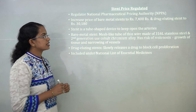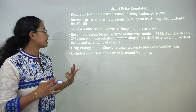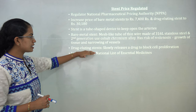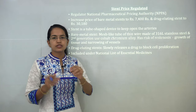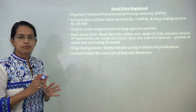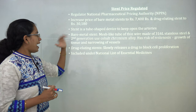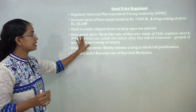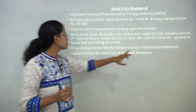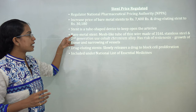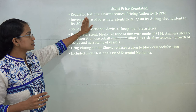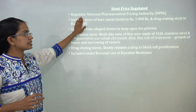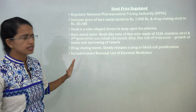Stent price regulation in India addresses devices implanted into arteries to keep them open. There are two types: bare metal stents and drug-eluting stents. Drug-eluting stents slowly release drugs into the bloodstream to avoid blockage; bare metal stents are thin wire meshes but carry a high risk of restenosis — growth of tissue and narrowing of blood vessels. Stent prices have been regulated under the National Pharmaceutical Pricing Authority and included in the National List of Essential Medicines, with new prices set for both types.